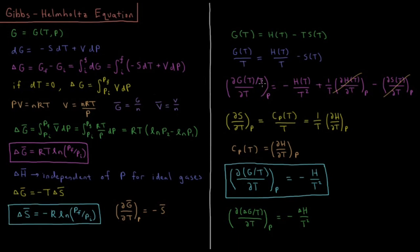The partial derivative of the Gibbs energy over temperature with respect to temperature at constant pressure is equal to d/dT of H over T, which gives us from the chain rule minus H(T) over T squared plus 1 over T times dH/dT, minus the derivative with respect to T of S(T). Now dS/dT equals the constant pressure heat capacity divided by the temperature, which equals 1 over T times Cp, and Cp is the partial derivative of the enthalpy with respect to temperature. So the term minus 1 over T dH/dT and the term plus 1 over T dH/dT cancel out.